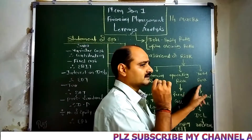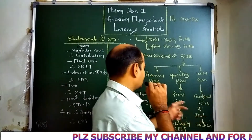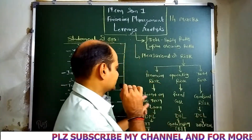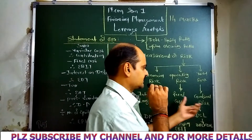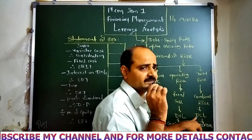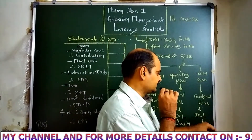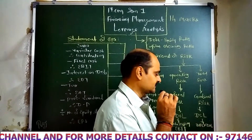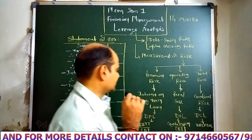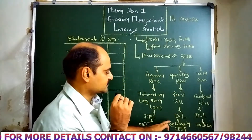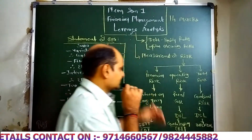The third type is Total Risk. It is the combination of interest on long-term loan and fixed cost, which is called combined risk. That is why we find the Degree of Combined Leverage, and the formula is DFL multiplied by DOL. The multiplication of these two gives you the Degree of Combined Leverage.